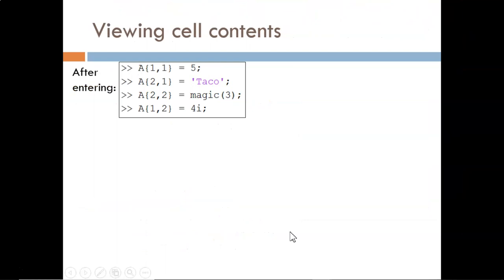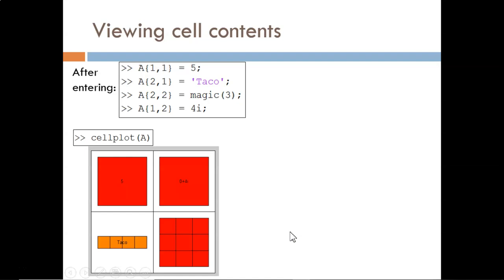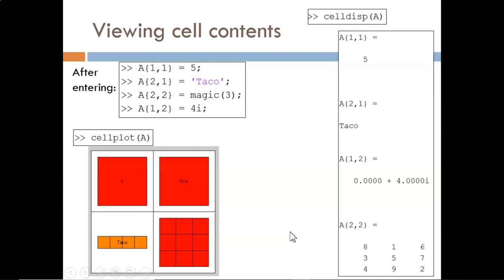Once a cell is created, there are a few ways to view its contents. The first is with the cellplot function. This creates the image shown below, which is a nice overview of the general contents. To see more specifics, use the celldisp function. This produces the shown output in the command window. This is a little cluttered but now you can see all the individual contents.